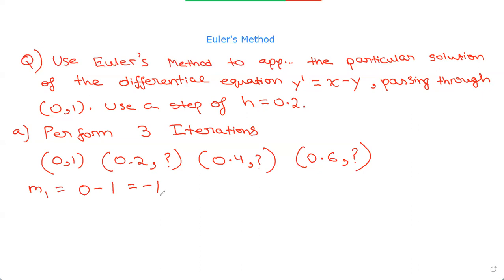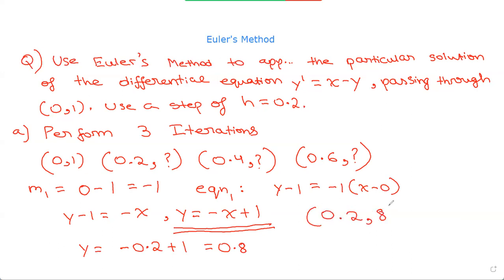So now we can express this in point slope form, right? We have the point and the slope is minus 1. So the equation, so equation 1 is y minus y1, which is 1, is equal to M, which is negative 1, into x minus 0. So we have y minus 1 equals negative x. Or y equals negative x plus 1. So this is the first equation which we got. Now using this equation, we can plug in x is 0.2. So y equals negative 0.2 plus 1. Negative 0.2 plus 1, which is equal to 0.8. So now we got our second point, right? 0.2 comma 0.8. This is our second point.